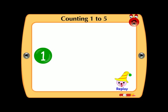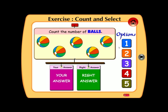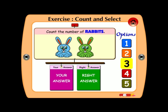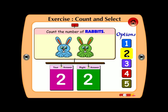1. Count the number of balls. No, there are 5 balls. Count the number right. There are 2 rabbits.